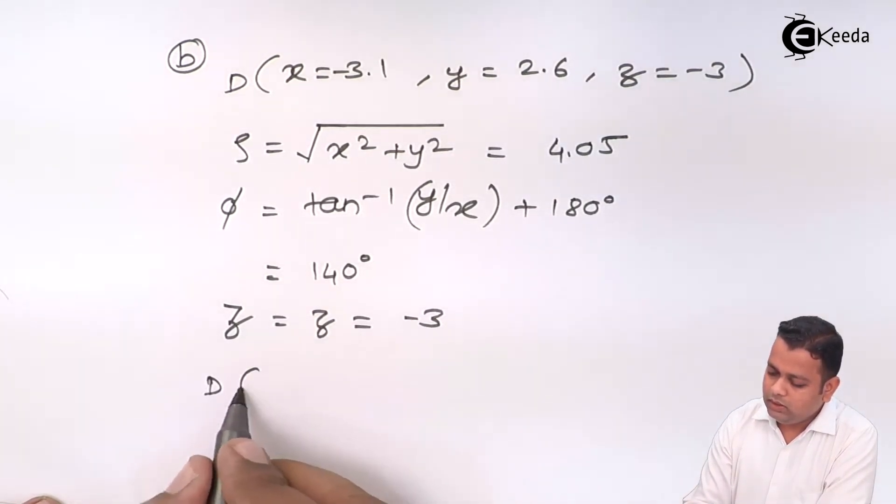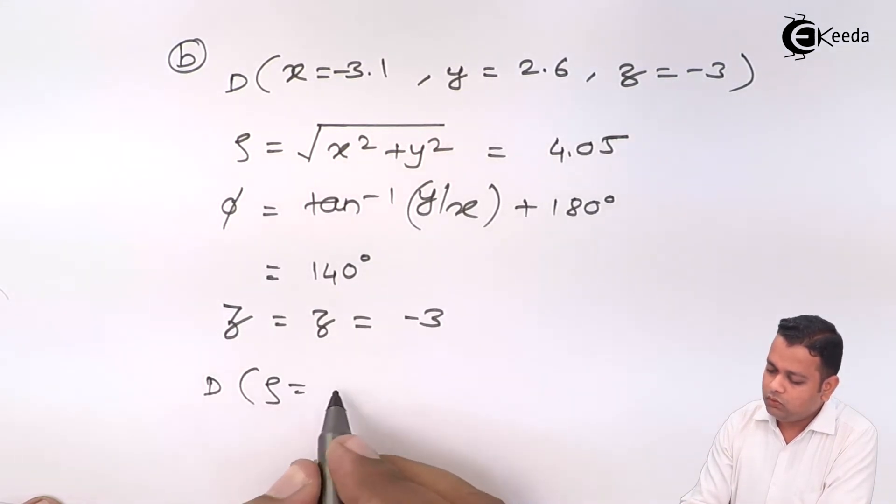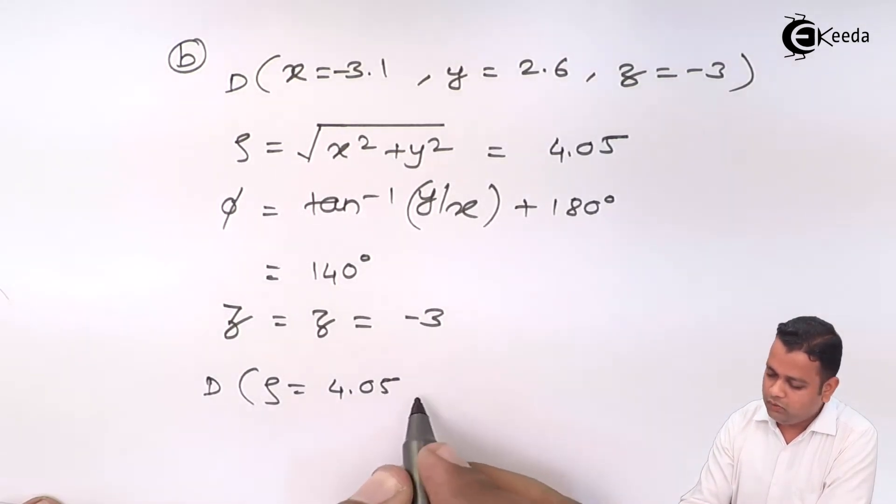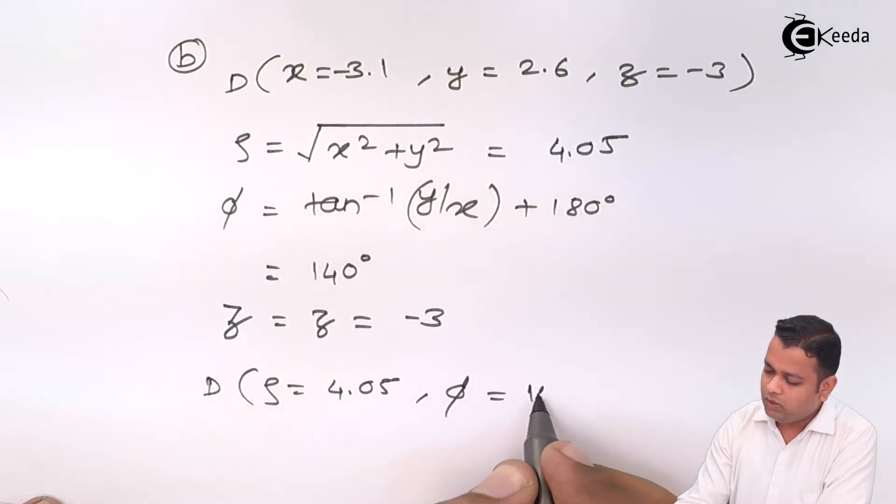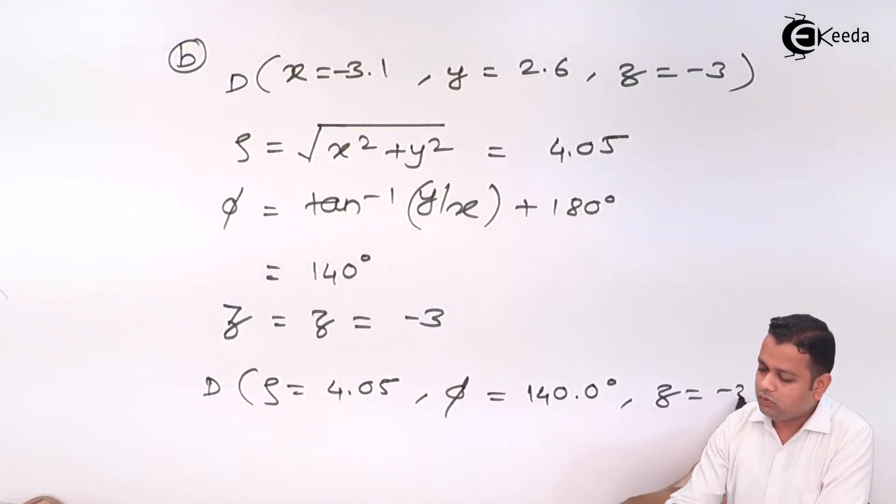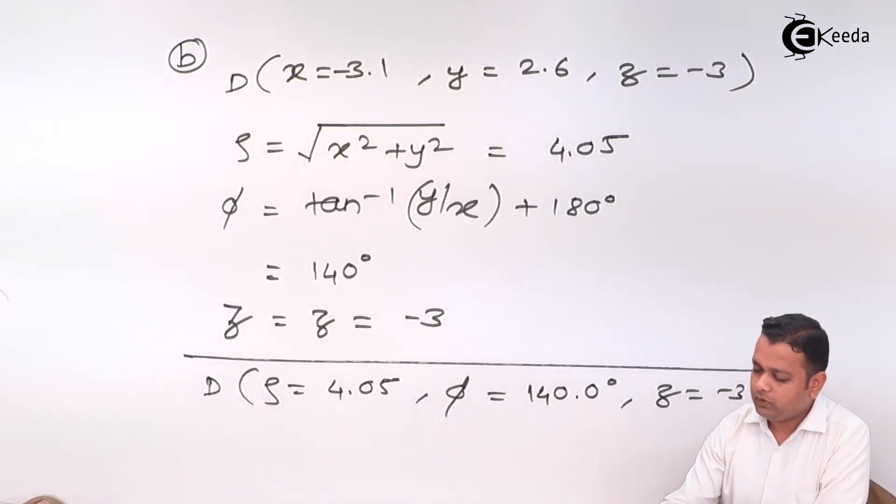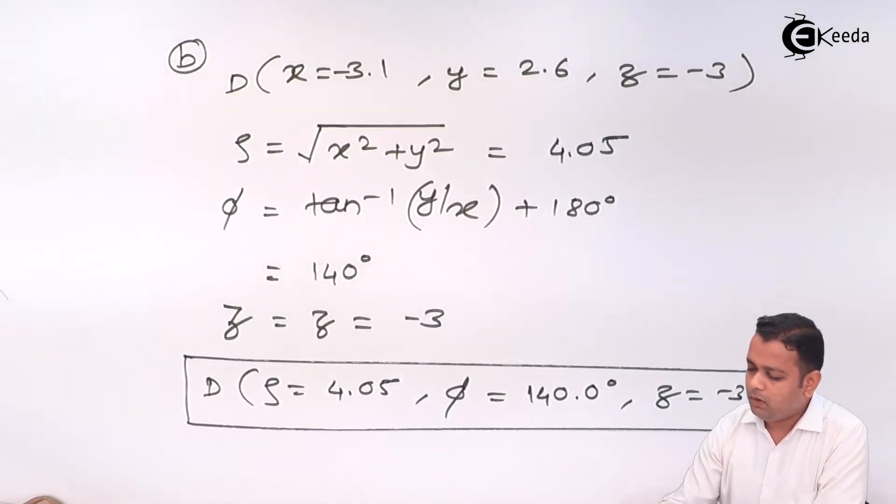So, finally, d will be holding the values rho is equal to 4.05, phi is equal to 140.0 degrees and z equal to minus 3. This is the answer of part B.